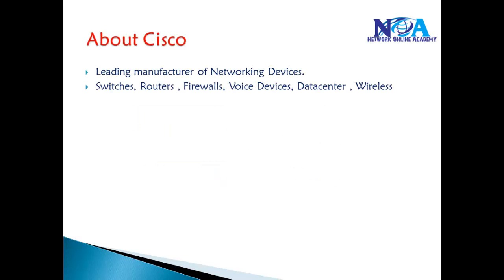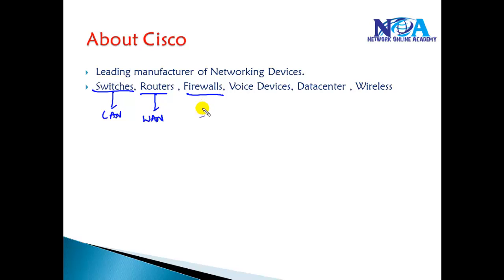In the previous section we discussed some networking devices. A switch is a device which provides a centralized location to connect all your computers in the LAN. Routers provide WAN connections. Firewalls are security devices which provide secure access to the internet. Other devices include IP phones, data center servers, and wireless access points. Cisco is a leading manufacturer of all these devices.